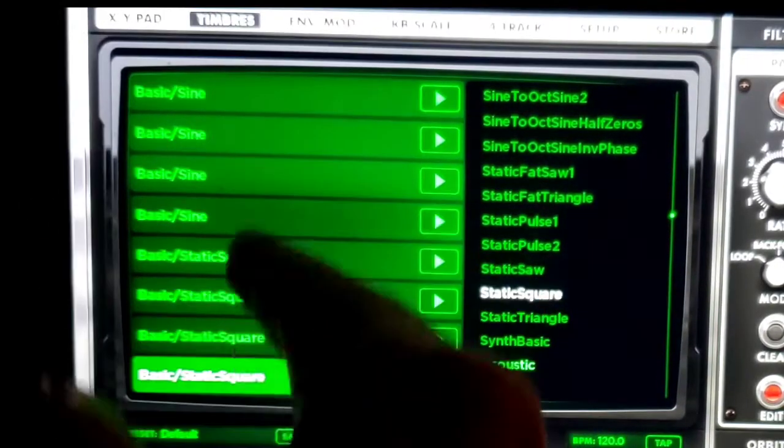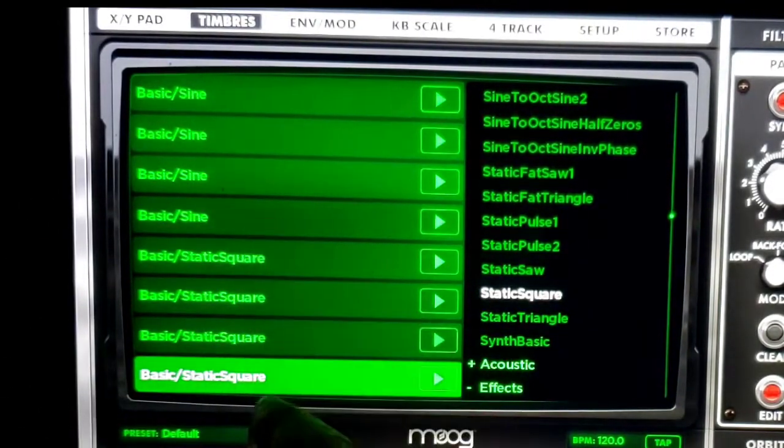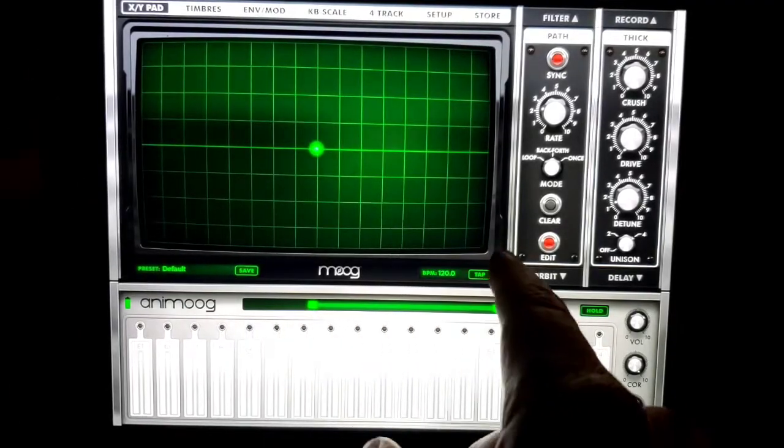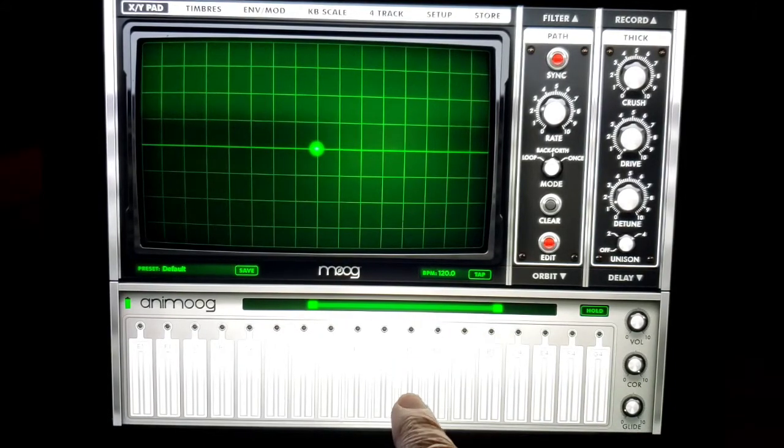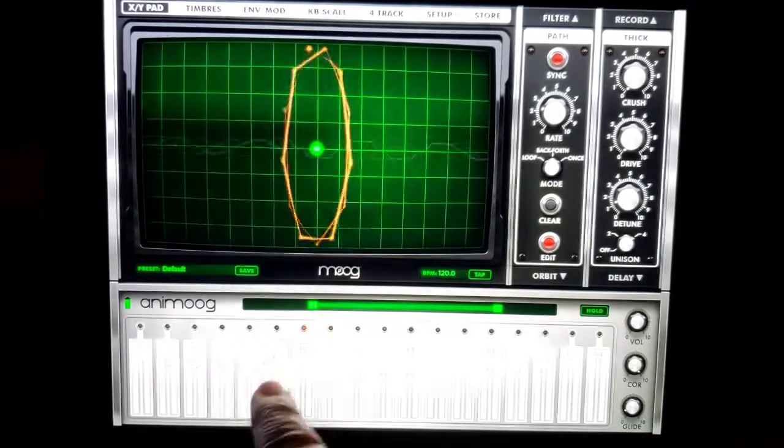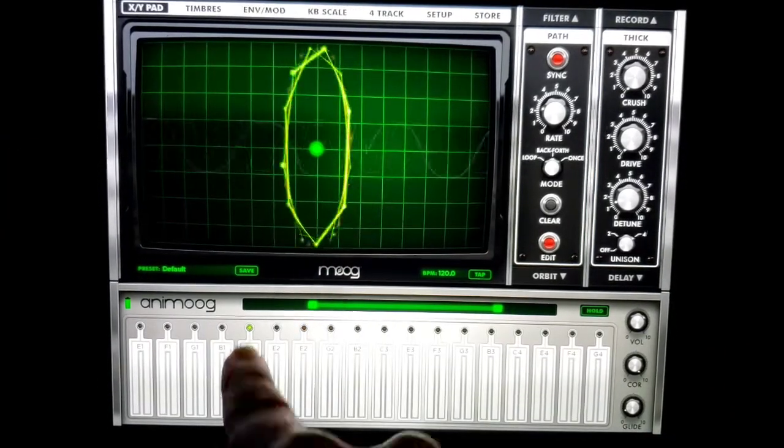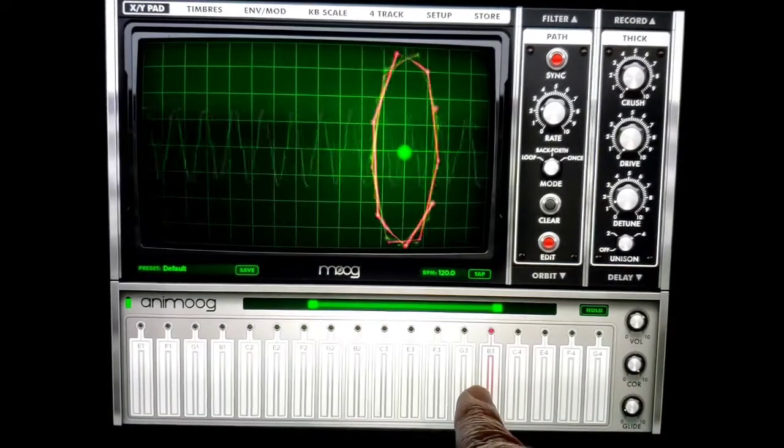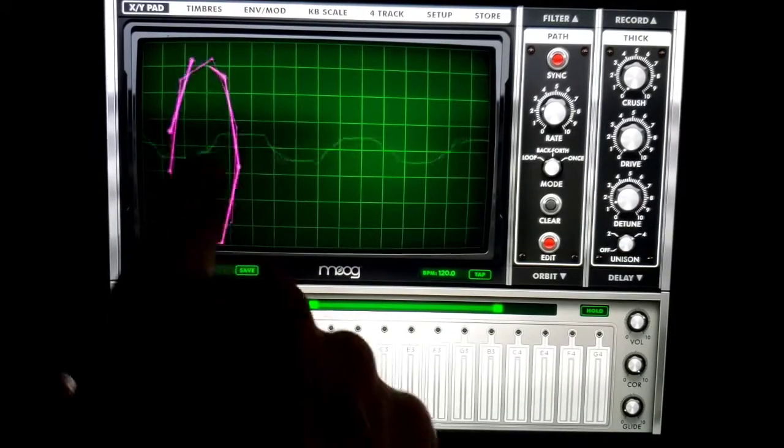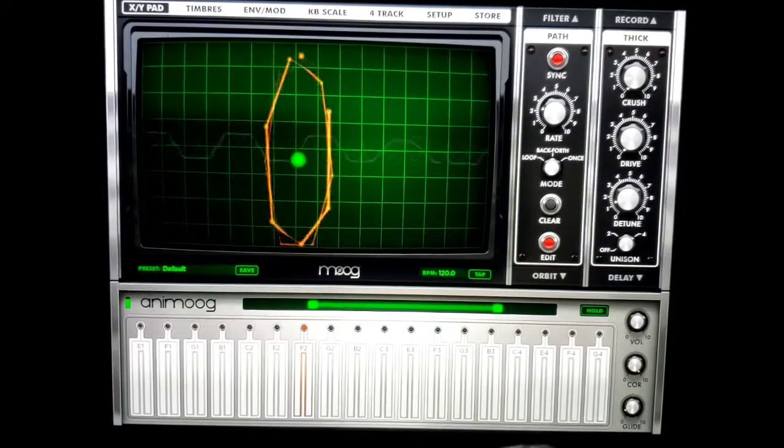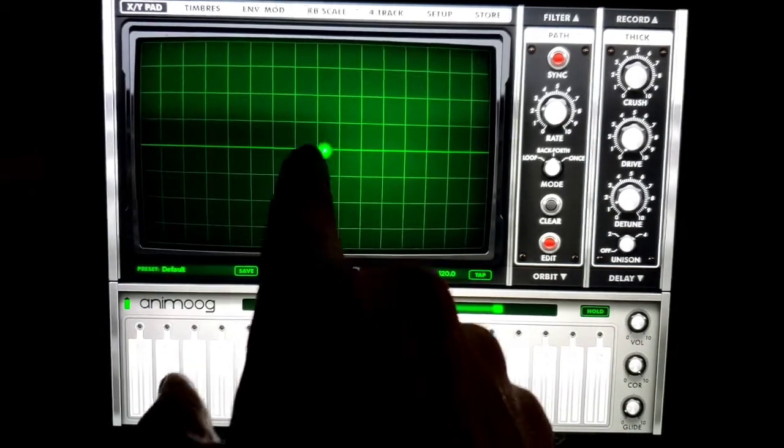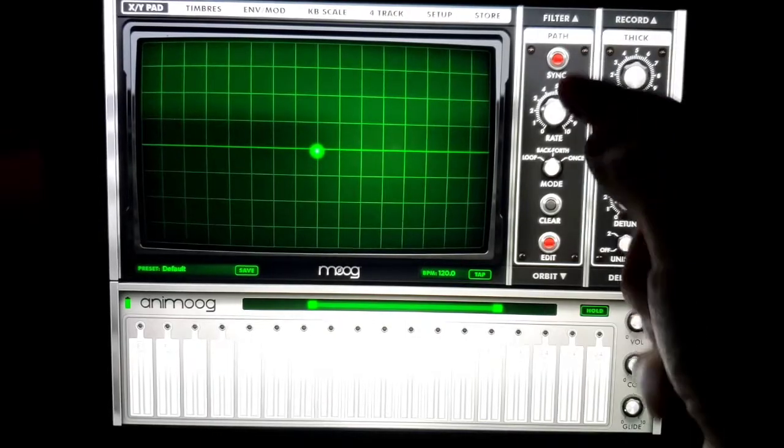So the top four rows of the screen are going to be sine waves and the bottom four rows are going to be square waves. Then we go back to the XY pad. If you just press any key, the orbit is going to center around that dot and you can move the dot around the screen. But a really cool thing to do is to create your own path, and you do that on this path menu here.